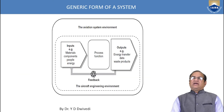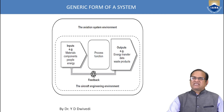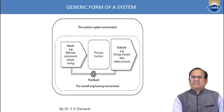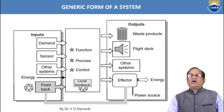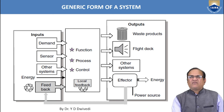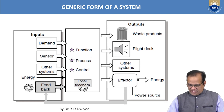In the generic form of a system for the aviation environment, we have input — materials, components, people, energy — which is processed, and from that we get output. From the output we get feedback, and if any correction is required the system automatically corrects. The three components required for any generic system are: input, process, and output.